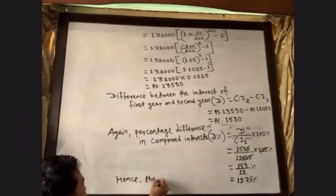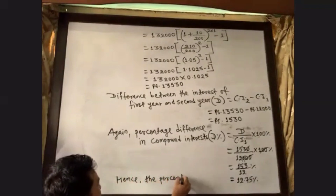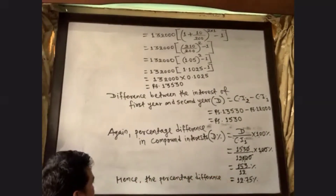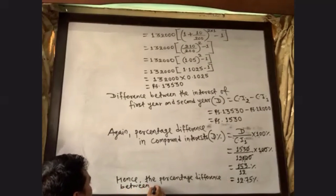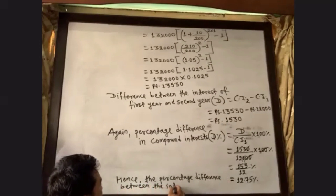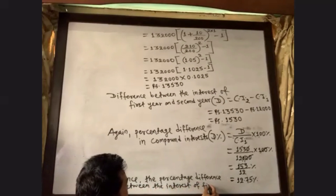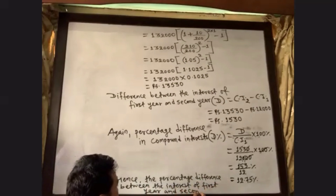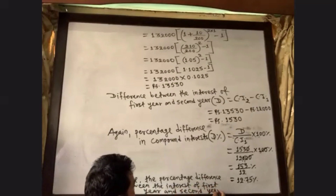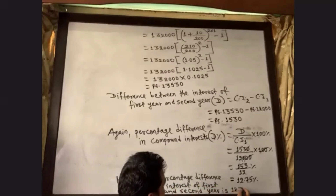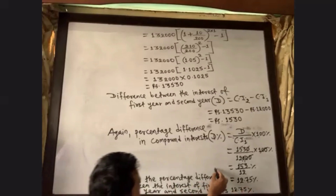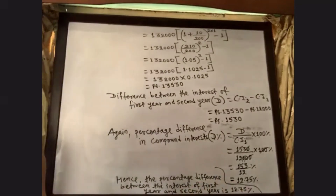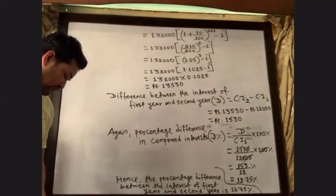Hence, the percentage difference between the interest of the first year and the second year is 12.75%. In this way, question number 12D is complete.